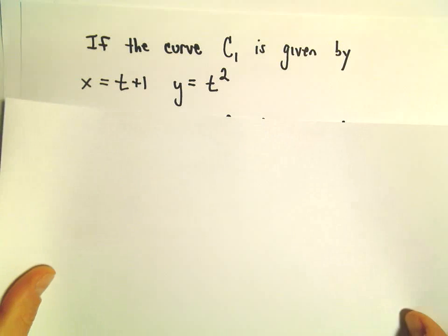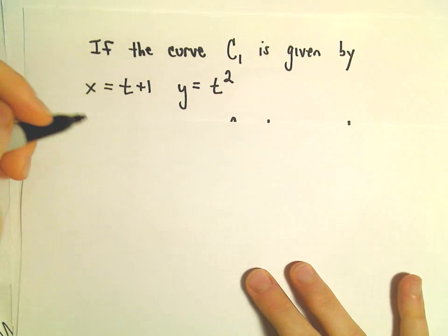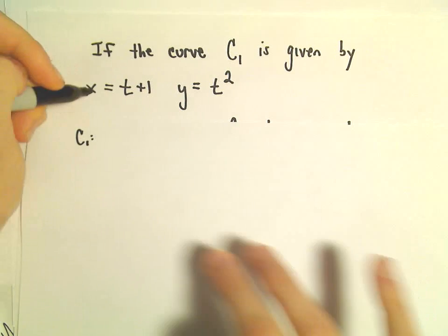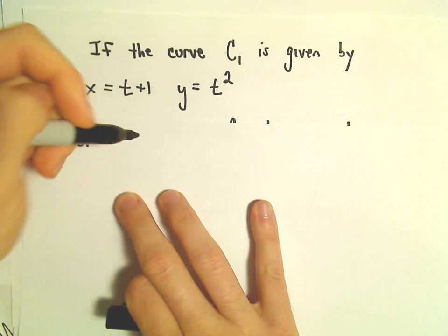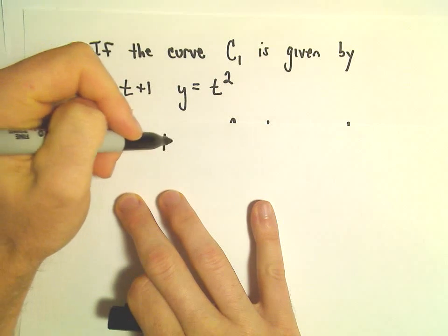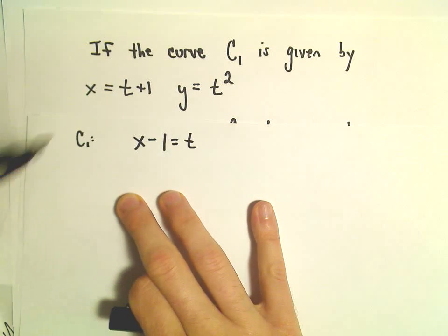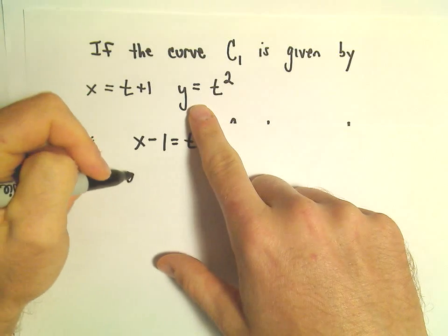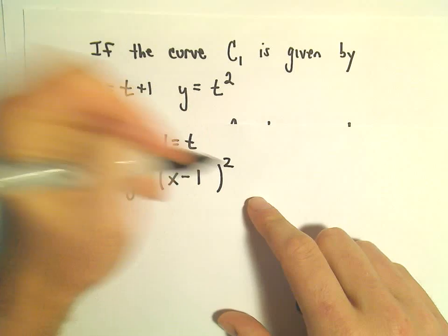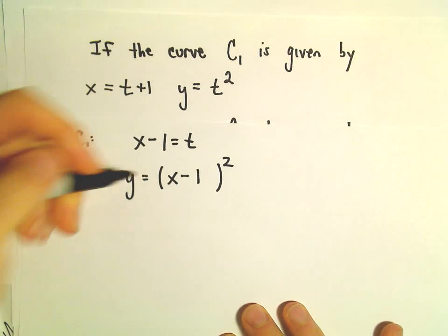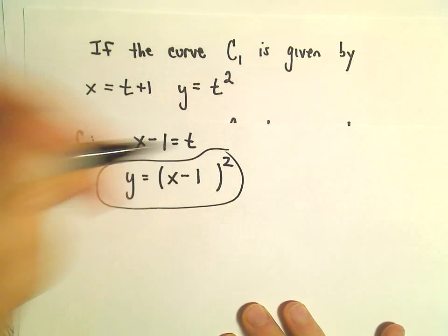All right, so to do this, I'm going to eliminate the parameter. So for our curve C1 here, I'm going to take the parametric equation involving X, and I'm going to solve for T. So to do that, we can just subtract 1 from each side. And then it says Y equals T squared. Well, that means that Y is going to equal X minus 1 squared. So now we've eliminated the parameter from our first curve.